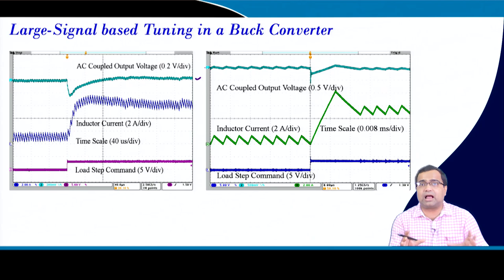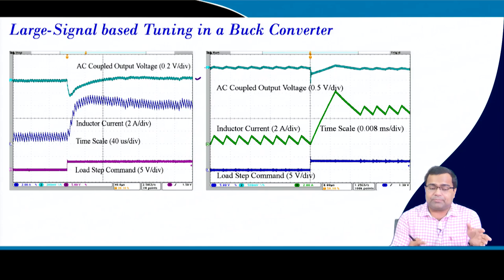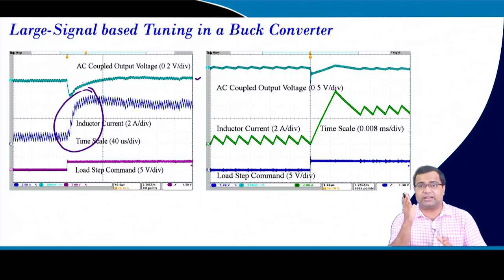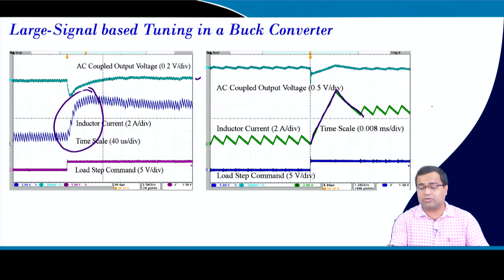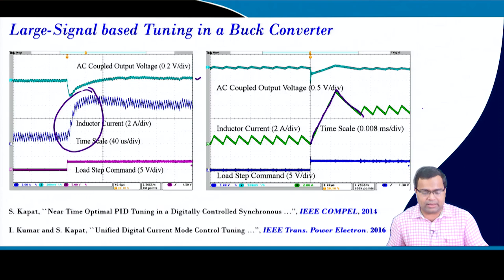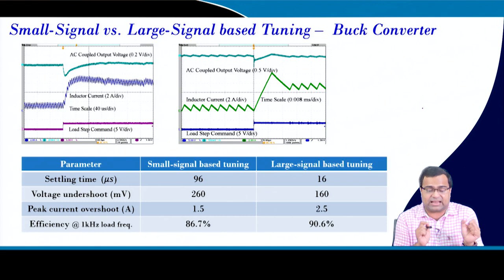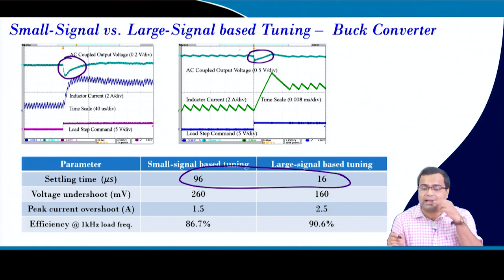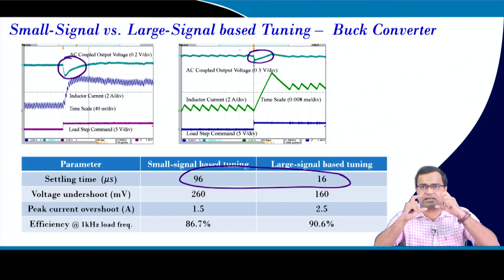Incorporating ripple information in controller tuning: we can design the controller considering current ripple using a large signal based approach. In traditional control, duty ratio variation during transient must be small for small signal model validity, limiting performance. In large signal based control, the duty ratio is allowed to saturate so it slips up or down quickly in one switching action - sometimes called time-optimal control. This achieves approximately 6 times faster response and reduces output voltage undershoot, enabling smaller output capacitors and higher power density.